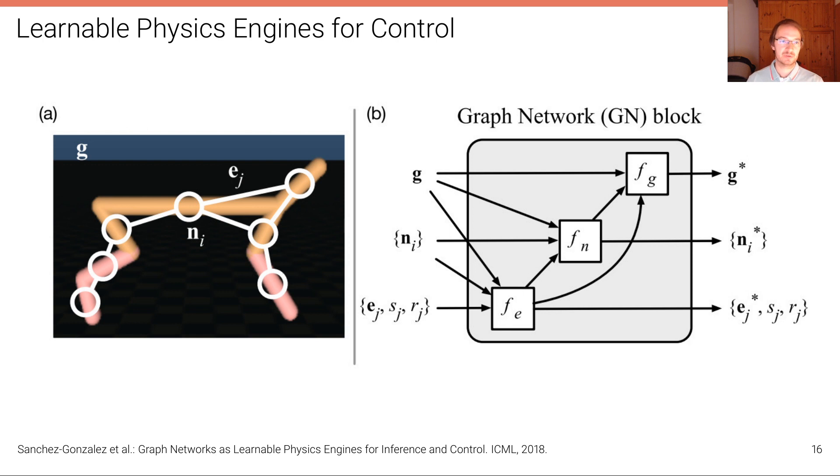And this is another example where physics was learned, in this case for control. Here you can see a little walking object or walker that is parameterized by the different body joints, and then there is a certain type of graph neural network that infers the underlying physics of this object in order for it to be able to walk.